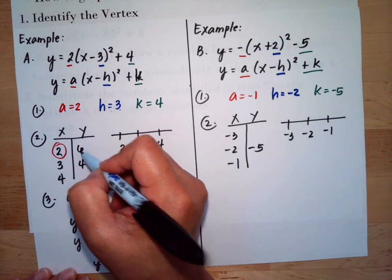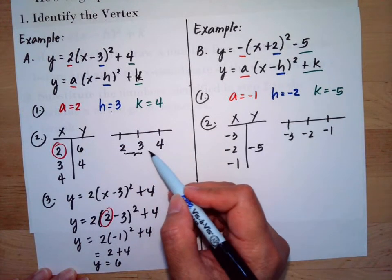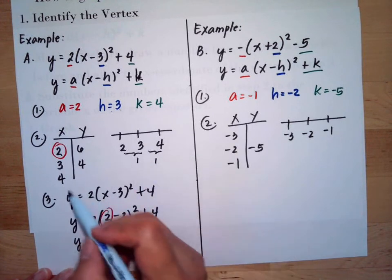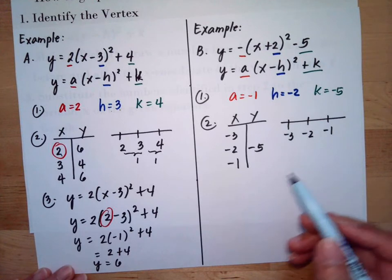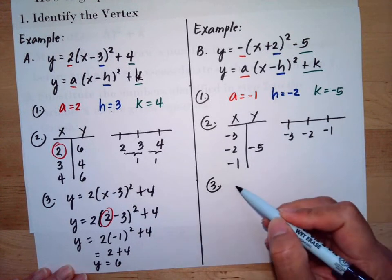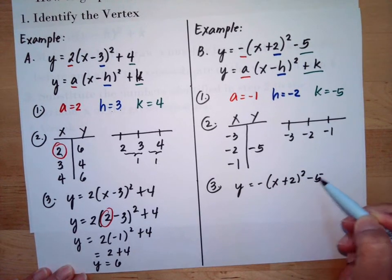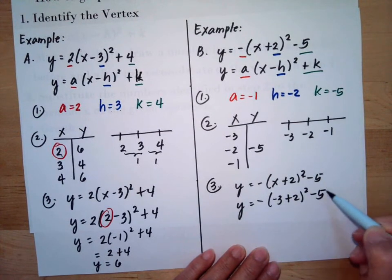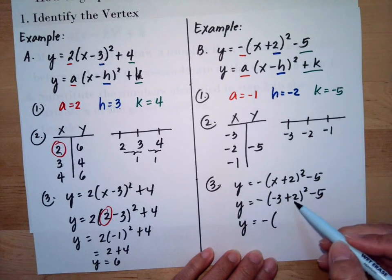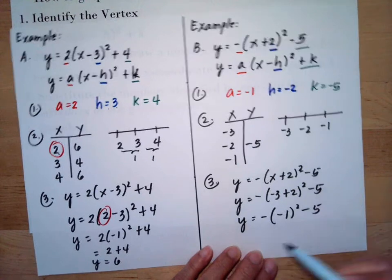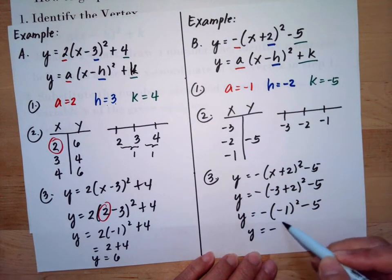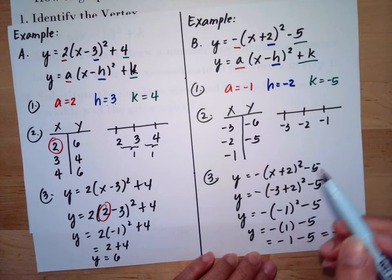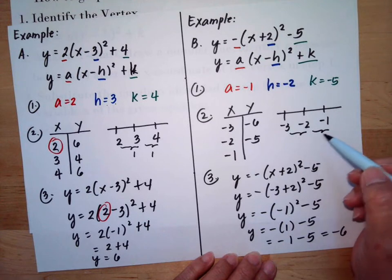Since the step between the vertex and the numbers before and after is the same — one step difference — they have the same y-value, so x = 4 also gives y = 6. For Example 2, substituting x = -3 into y = -(x + 2)² - 5: -3 + 2 = -1, and (-1)² = 1, but there is a negative outside, so we get -1 - 5 = -6. Again, by symmetry, x = -1 also gives y = -6.